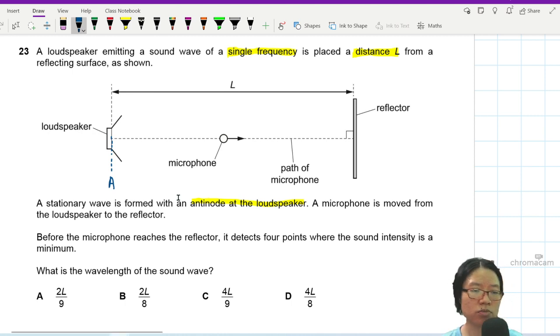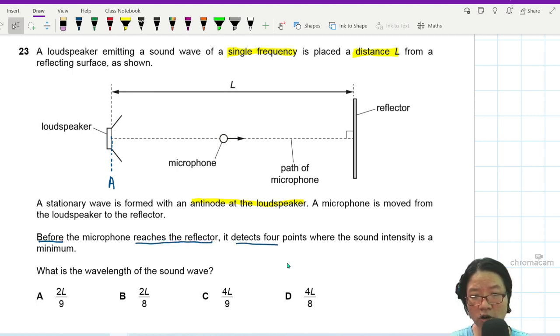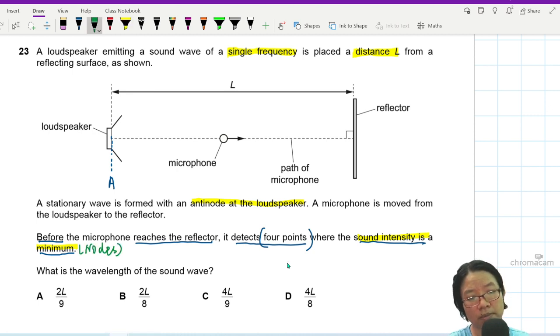The microphone is moved from the loudspeaker towards the reflector. Before the microphone reaches the reflector, it detects four points where the sound intensity is a minimum. Minimum sound intensity is node. These are the nodes, because the particle vibration is minimum so the sound would be the softest.